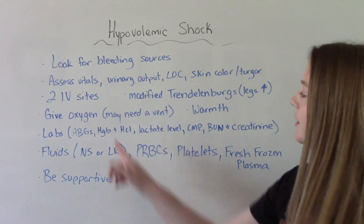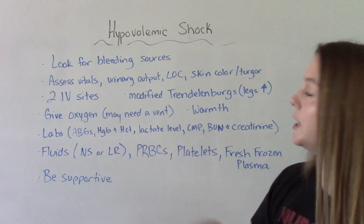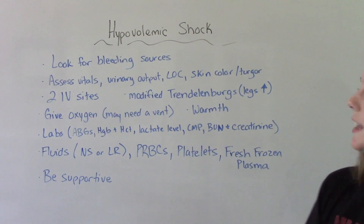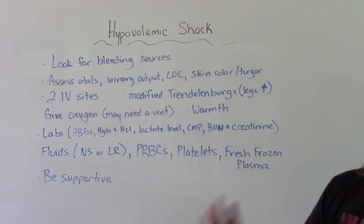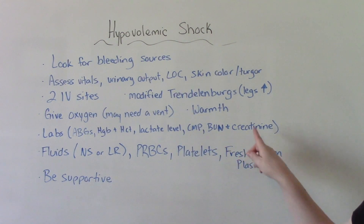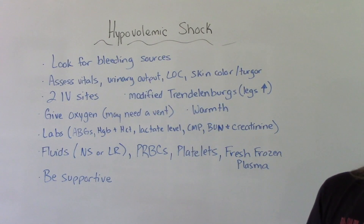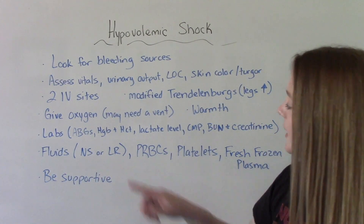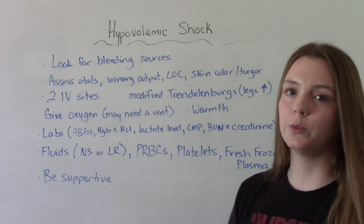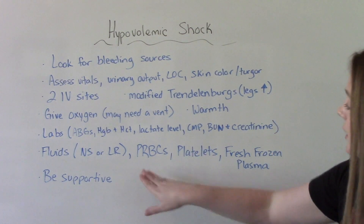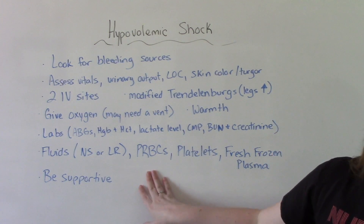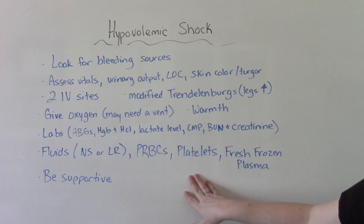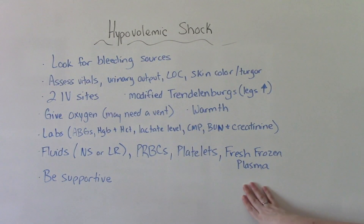Labs that we're going to draw include ABGs, hemoglobin and hematocrit, lactate level, a CMP for electrolytes, BUN, and creatinine. When it comes to fluids, normal saline or lactated Ringer's are going to be our fluids of choice. We can also give packed red blood cells to replace any lost blood volume, platelets, and fresh frozen plasma.